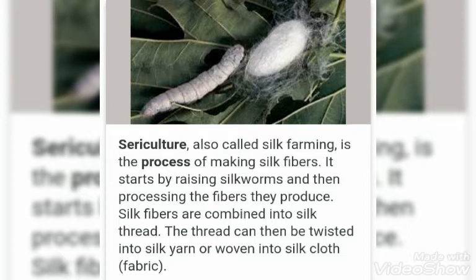Sericulture, also called silkworm farming, is the process of making silk. It starts by raising silkworms and then processing the fibers they produce. Silk fibers are combined into silk thread. The thread can then be twisted into silk yarn or woven into silk cloth. Silk yarn is a bunch of silk fibers tucked together into a yarn.